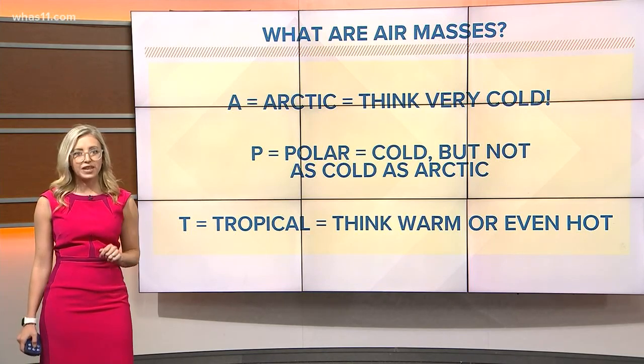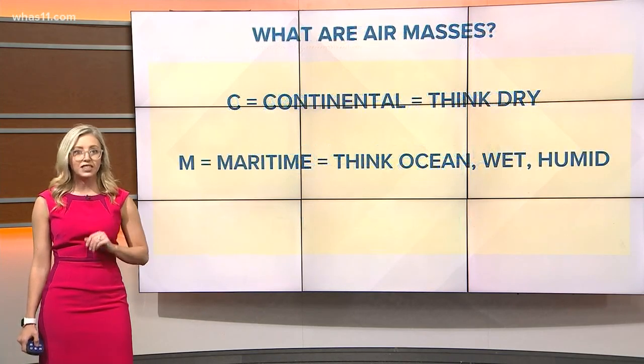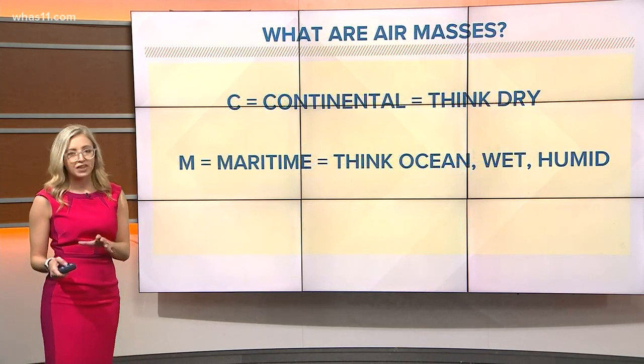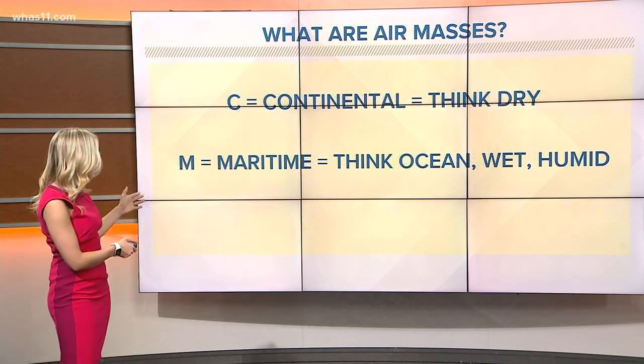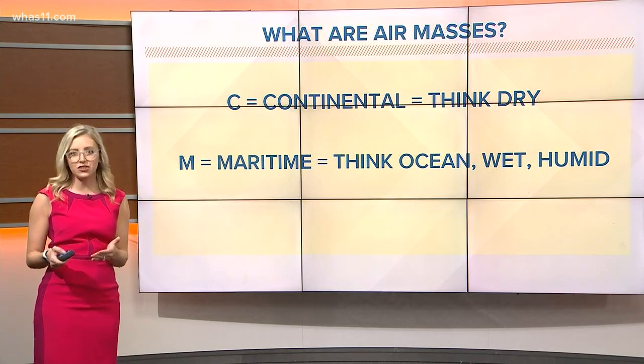Next we have the location where air masses form. C is for continental — think dry. M is for maritime — think ocean, wet and humid.